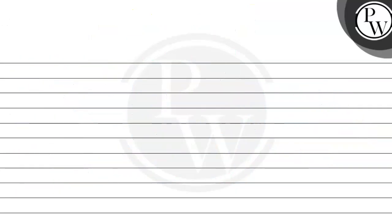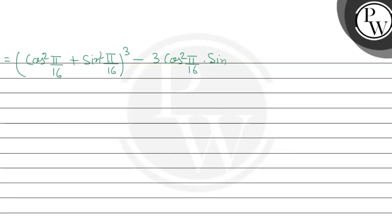Applying the identity, we get: (cos² π/16 plus sin² π/16)³ minus 3 times ab, where ab means cos² π/16 times sin² π/16, in bracket a plus b means cos² π/16 plus sin² π/16.